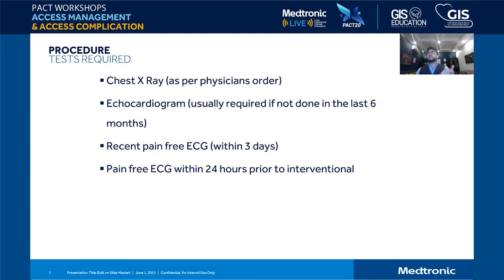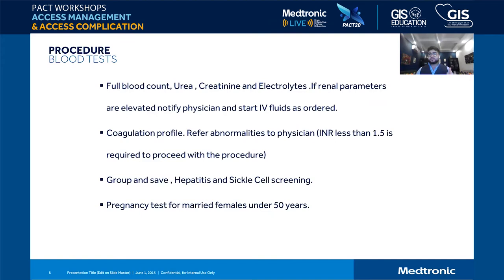A chest X-ray may be ordered in some hospitals. Cross-match for all patients is a requirement in some centers though many private hospitals no longer require it. A recent pain-free ECG is needed. Blood work required includes CBC, urea, creatinine, electrolytes, and INR less than 1.5 — especially for radial access. A pregnancy test is required for ladies under 50 years old.